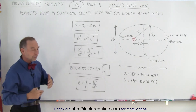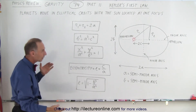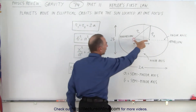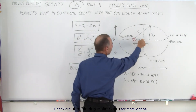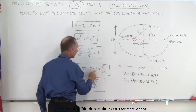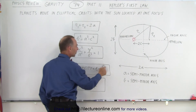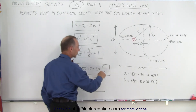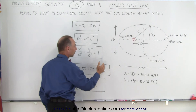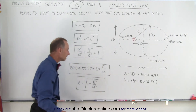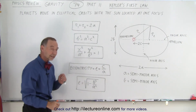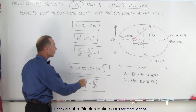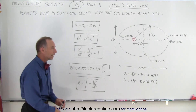The eccentricity of the orbit tells you how elliptical it is. If it's a perfect circle, the two foci come together, C equals zero, and the eccentricity will be zero. But if C is not zero, the eccentricity can be calculated by the ratio of C over A. You can also calculate the eccentricity by taking the square root of 1 minus B squared over A squared.